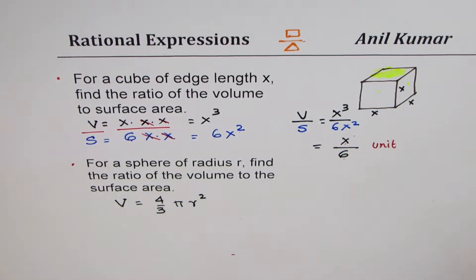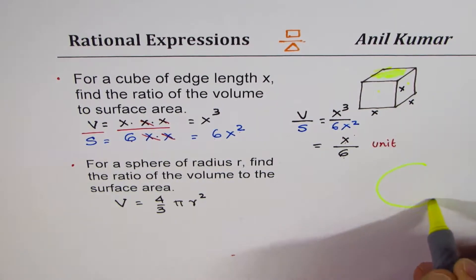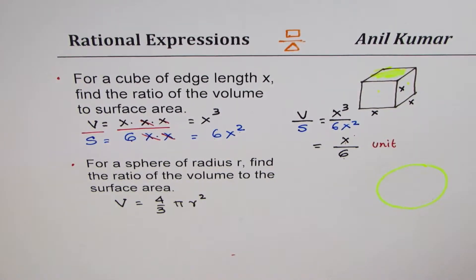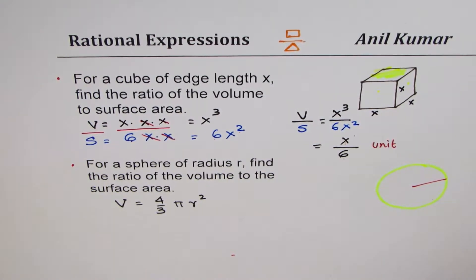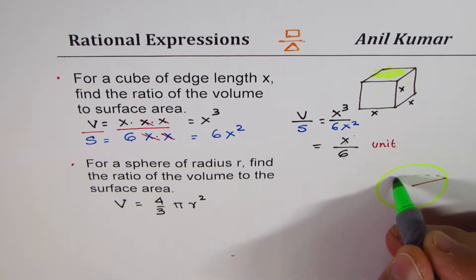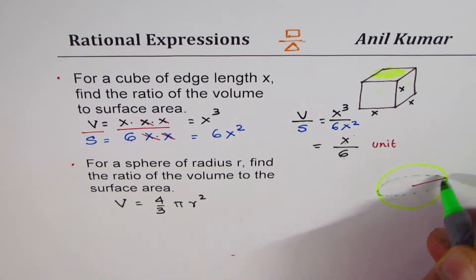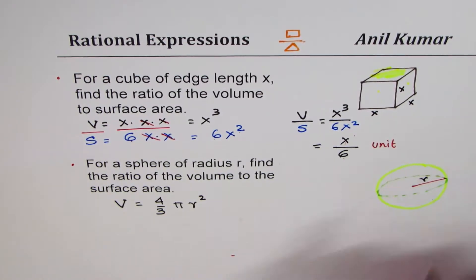If I have a sphere, in that case the radius is r. So let me give it a three-dimensional look here. So that becomes r, the radius of a sphere.